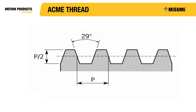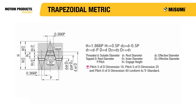The ACME thread form has a 29-degree thread angle, with a thread height that is half of the pitch. This standard has been used quite extensively for a long time in the industry, and thread diameters are defined in nominal inch sizes. Metric trapezoidal threads are very similar to ACME threads, except the angle is 30 degrees instead of 29 degrees, and the thread dimensions are in millimeters instead of inches. ACME threads and metric trapezoidal threads are not compatible with each other, and it is this thread form that Misumi uses on all their lead screws.